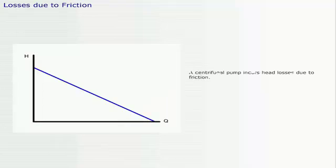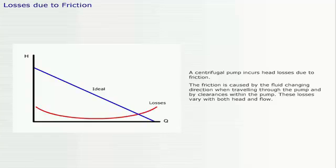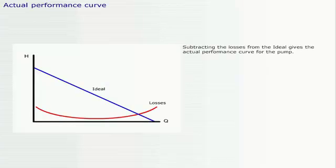A centrifugal pump incurs head losses due to friction. The friction is caused by the fluid changing direction when traveling through the pump, and by clearances within the pump. These losses vary with both head and flow. Subtracting the losses from the ideal gives the actual performance curve for the pump.